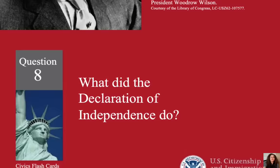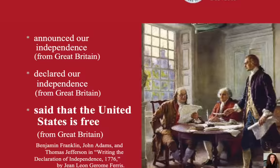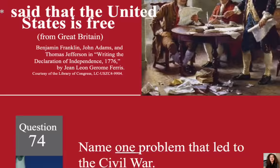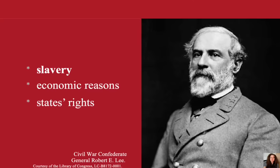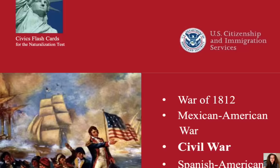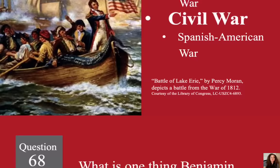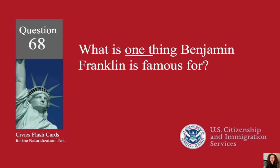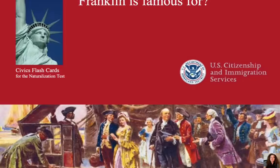What did the Declaration of Independence do? Said that the United States is free. Name one problem that led to the Civil War. Slavery. Name one war fought by the United States in the 1800s. The Civil War. What is one thing Benjamin Franklin is famous for? U.S. diplomat.